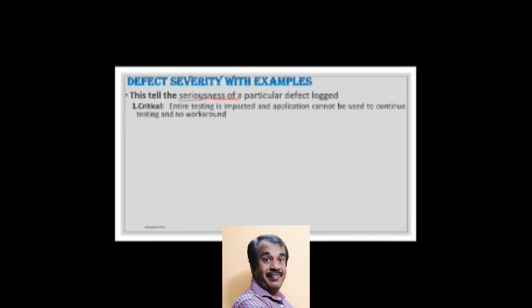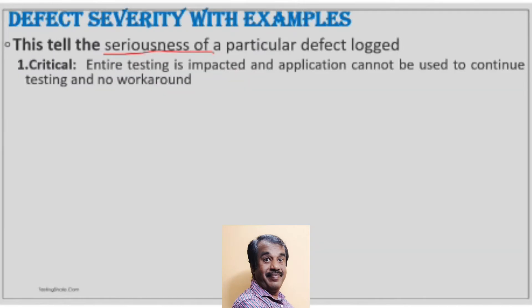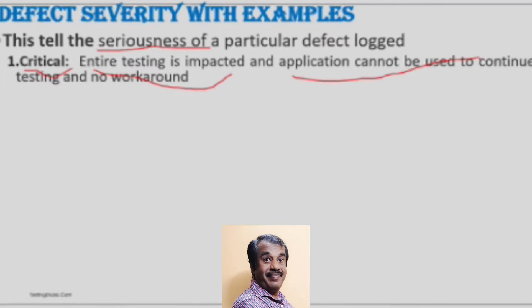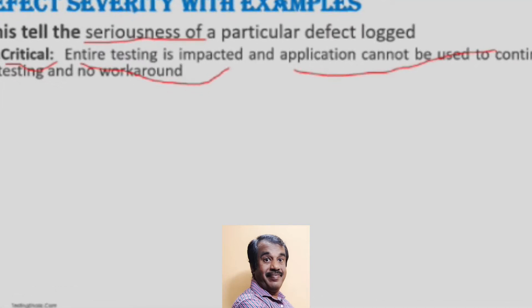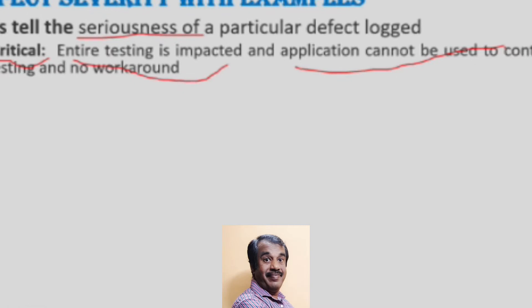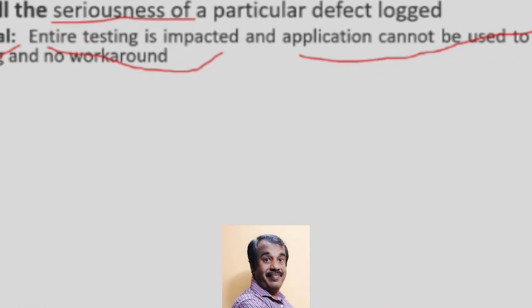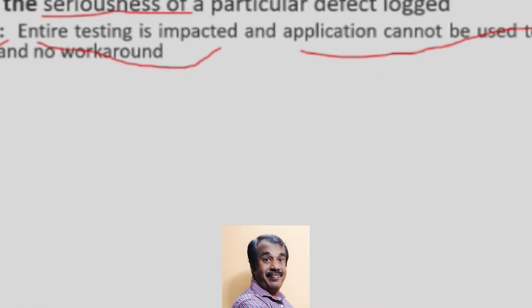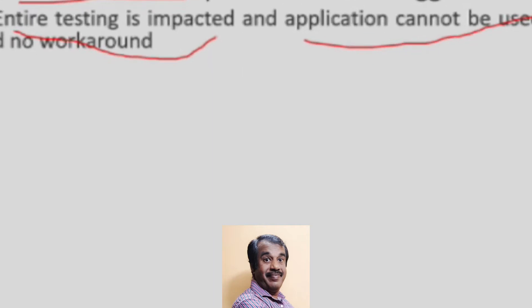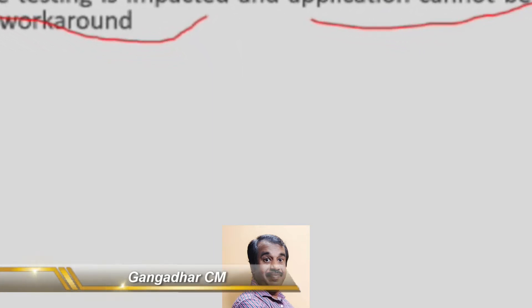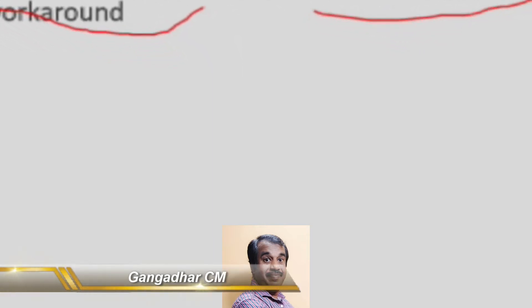The first severity level is Critical. A defect is classified as critical when entire testing is completely altered and we are not able to access the application or perform any testing because there is no workaround.